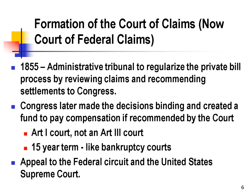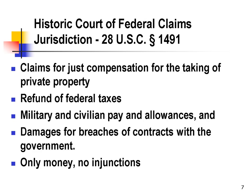The judgments of the Court of Federal Claims are appealed to the Federal Circuit, and from the Federal Circuit they are appealed to the United States Supreme Court. The original jurisdiction of the Court of Federal Claims covers just compensation for the taking of private property, disputes over the refund of federal taxes, disputes over military and civilian pay allowances, and damages for breach of contracts with the government.